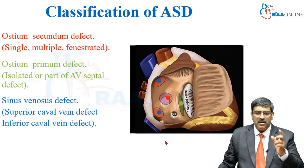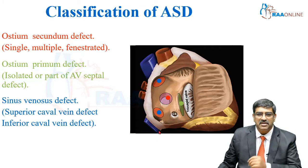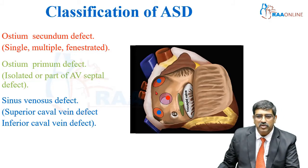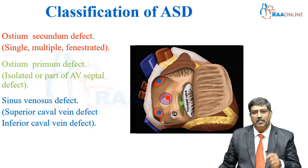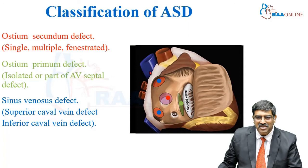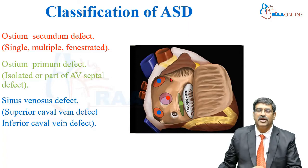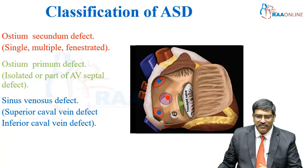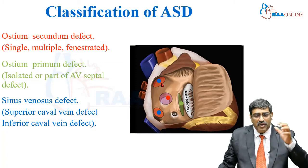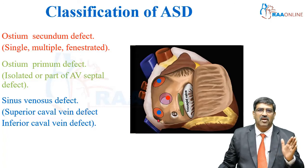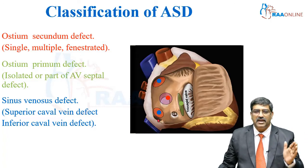The next type is called the sinus venosus ASD. This is the superior vena cava and this is the inferior vena cava — normally both drain into the right atrium. But in the vena cava defect, what happens is when it drains through the defect it goes directly into the left atrium. So there is an opening at the junction of SVC-RA or the IVC-RA, and that is called the sinus venosus ASD.